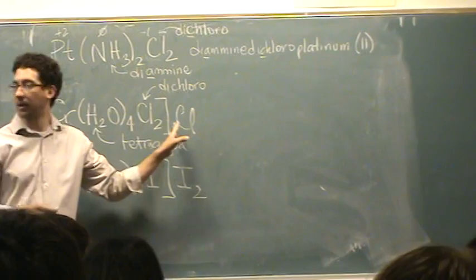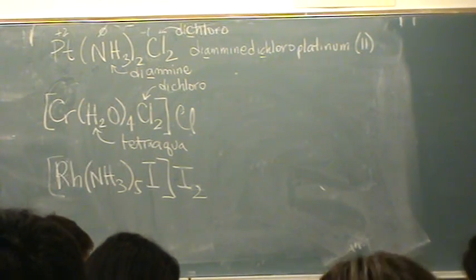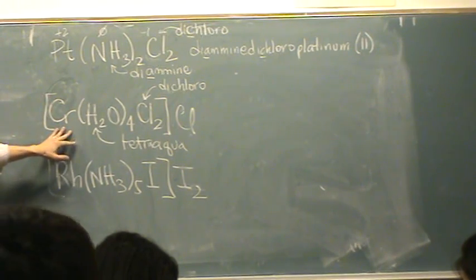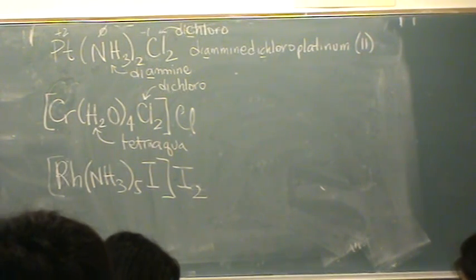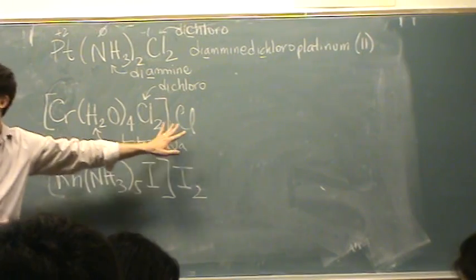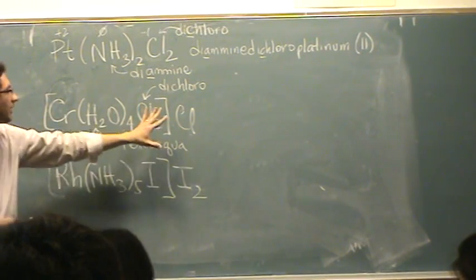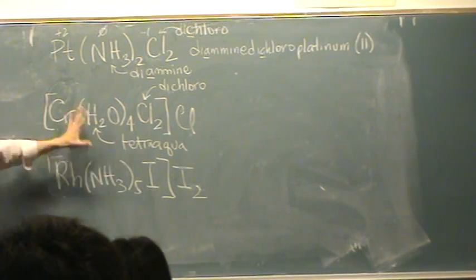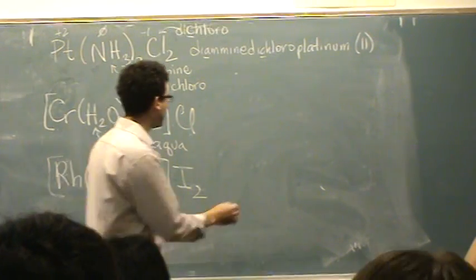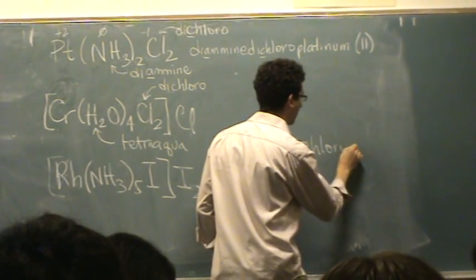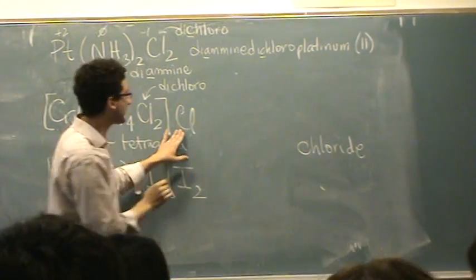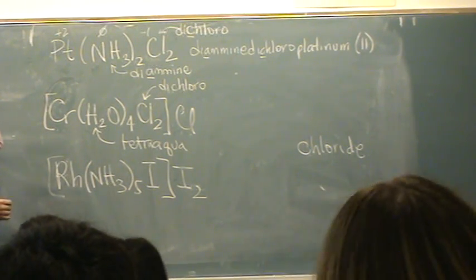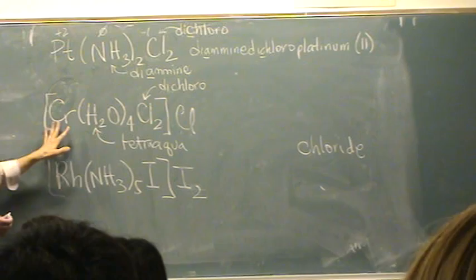Anything outside the brackets is called a counter ion. It's not bonded to the complex per se. It just balances the charge. Think of like sodium chloride or potassium chloride. So we're going to name this blah blah blah chloride. So it has two names. The second name from the chlorine outside the brackets is called chloride. Just like sodium chloride, potassium chloride, or ammonium chloride. Now the first name.